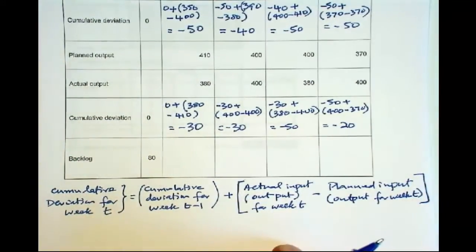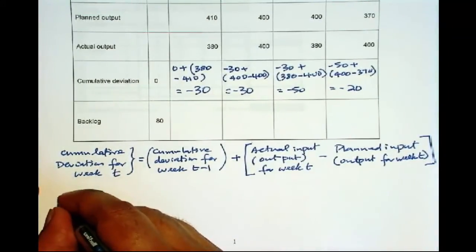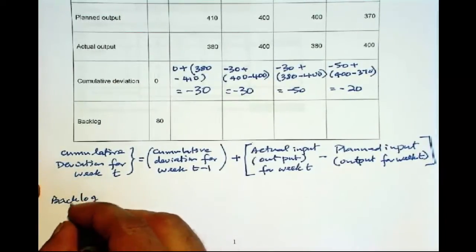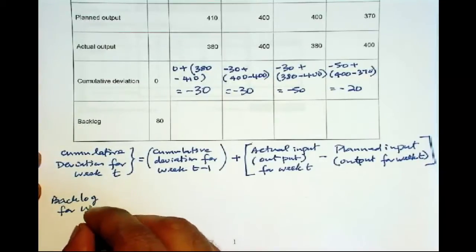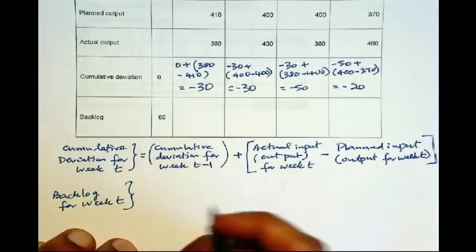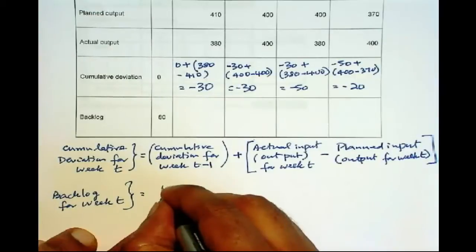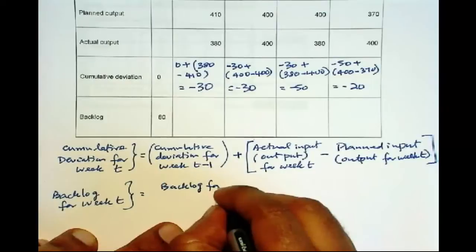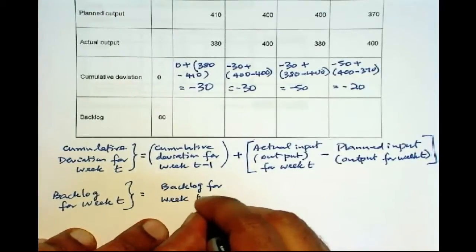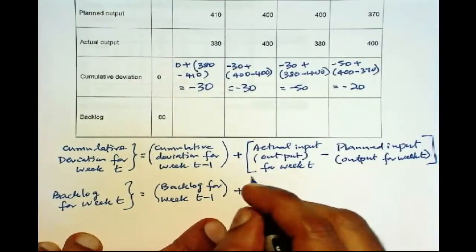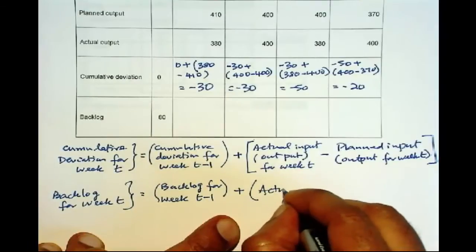So now let's look at backlog. Backlog for a given week, backlog for week T, any week T, is you take the backlog for week T minus 1, that is the previous week, plus actual input minus actual output.